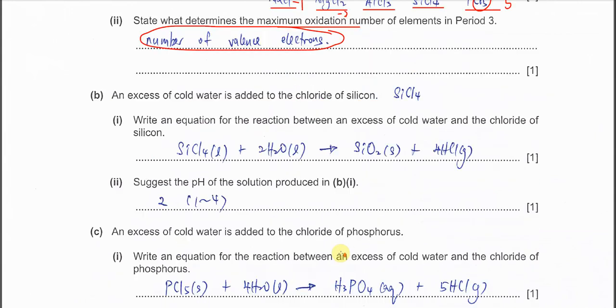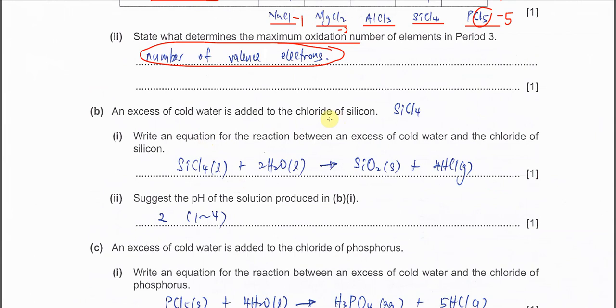Part B: an excess of cold water is added to chloride of silicon, SiCl4. Write an equation between this compound with cold water. For this one the state symbol is not really needed, but you better get ready. SiCl4 is liquid, H2O is liquid, SiO2 is a solid white solid.